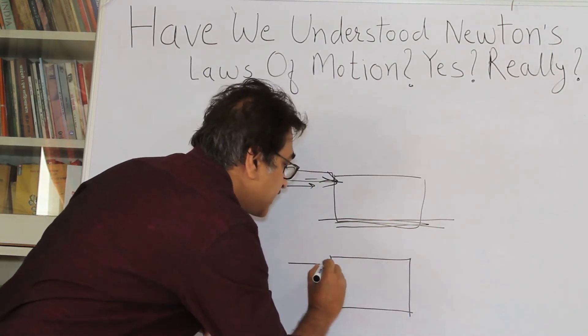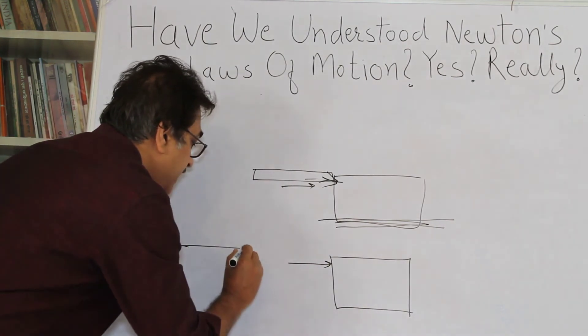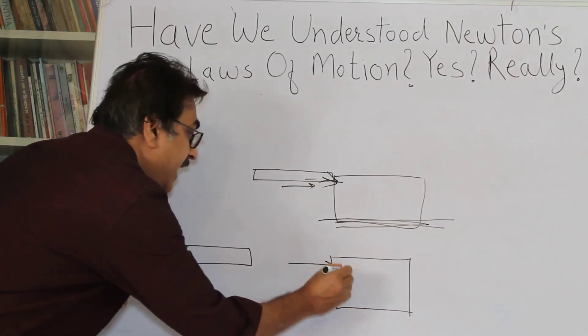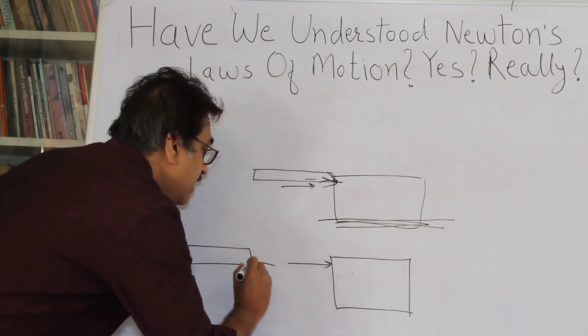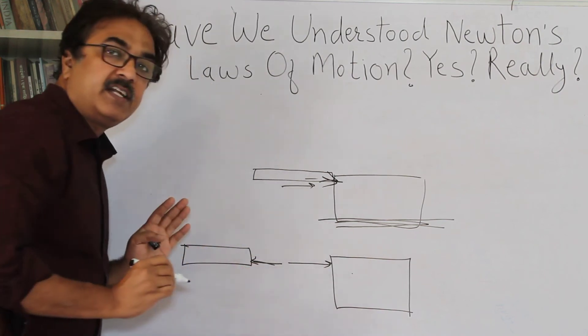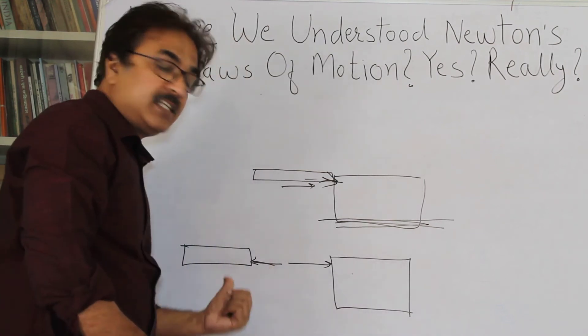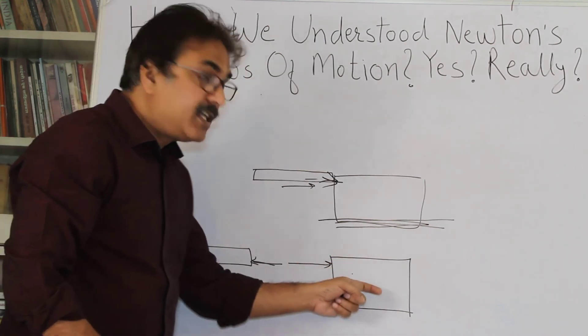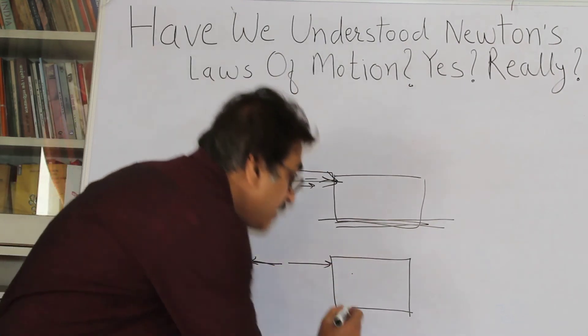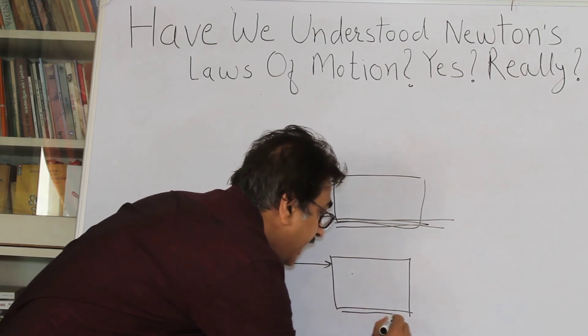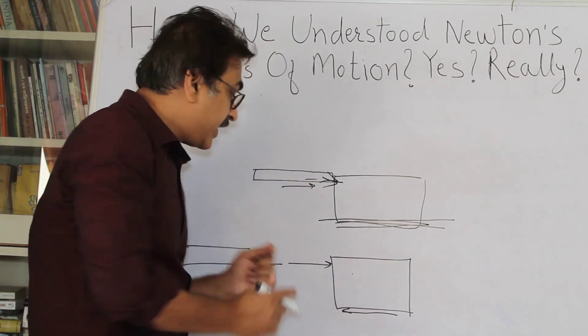Then, the action here, if I am drawing the pen here, the reaction of this body will be equal in magnitude and opposite in direction. Right? So, they have to be separated. Action is acting on one body, reaction is acting on another body. Whether this body would move or not, will depend upon the frictional force which will be acting on this body. Right? The friction force will be acting on this body.